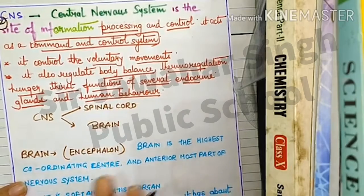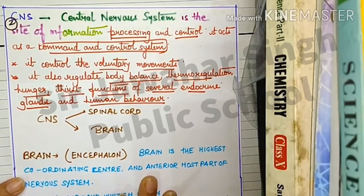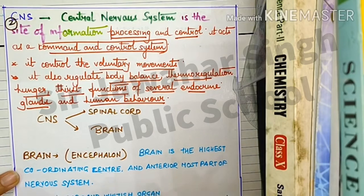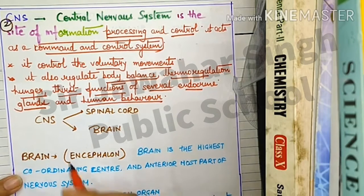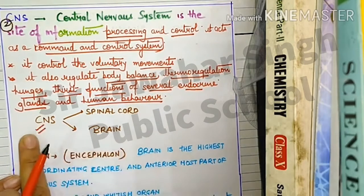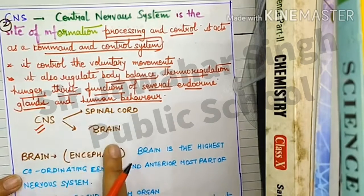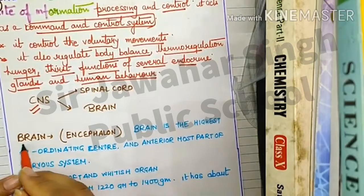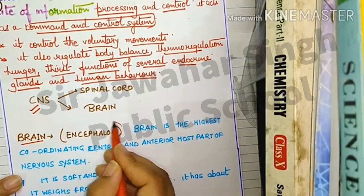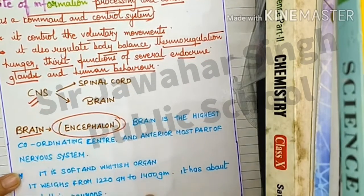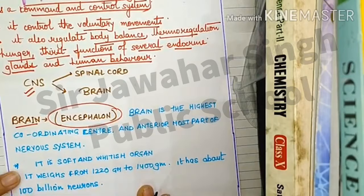CNS is one of the vital systems that maintains and controls approximately all movements because it contains the brain. CNS is divided into two parts: spinal cord and brain. In scientific terminology, the brain is also known as encephalon.